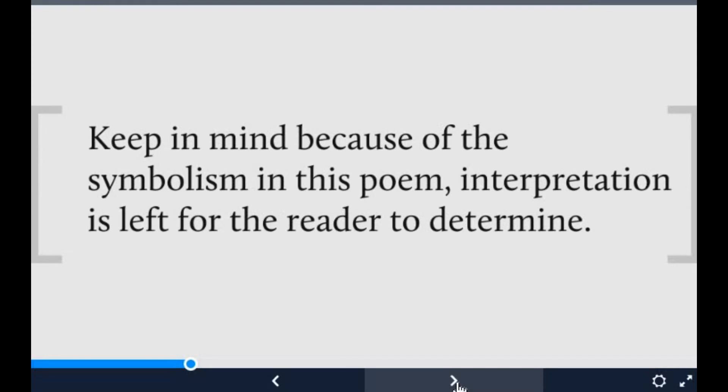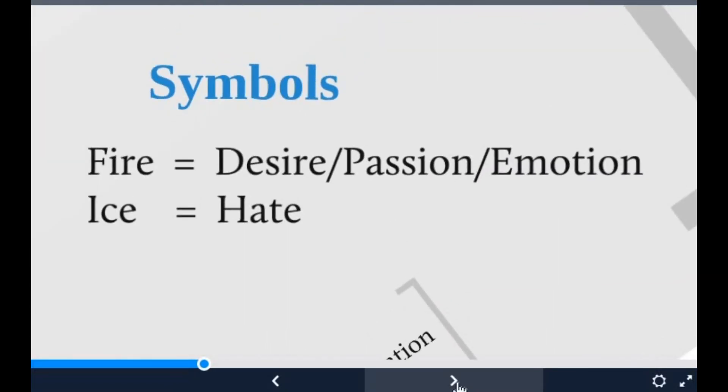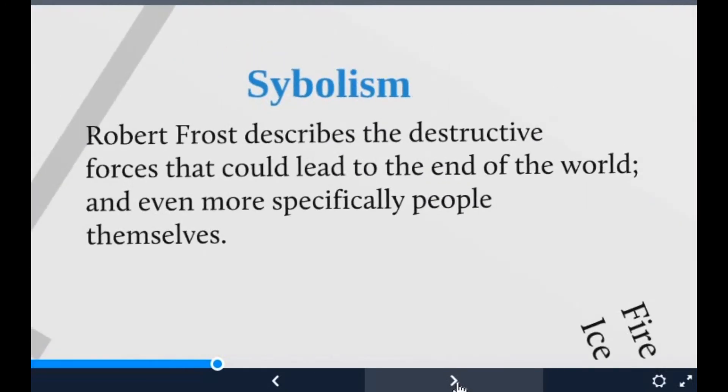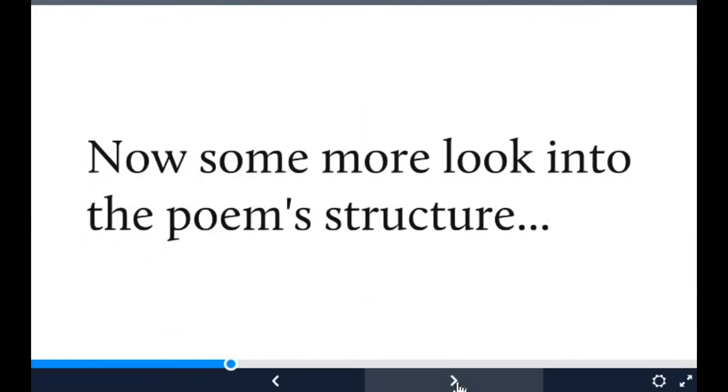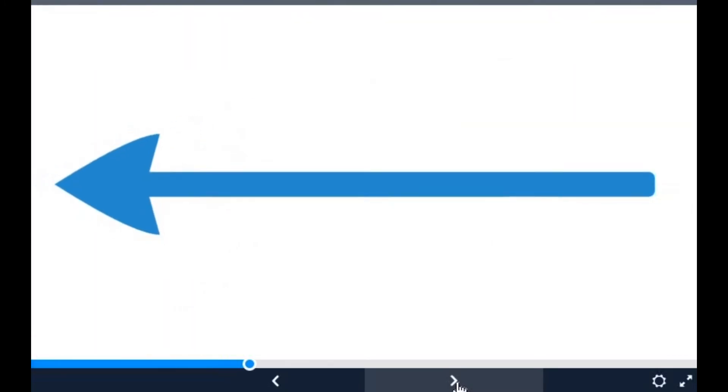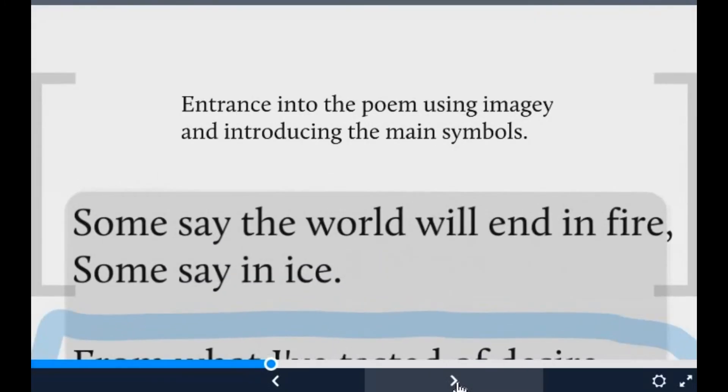Fire here is a symbol of humanly desires, passions, emotion. Ice is a symbol of hate and hatred that we have for other people. Now when we read the poetry, the world will end in fire or by the destruction of ice—we might derive many different meanings in our own mind. Let's look into the poem's structure: some say the world will end in fire, some say in ice. There is use of imagery and the main symbols are used.